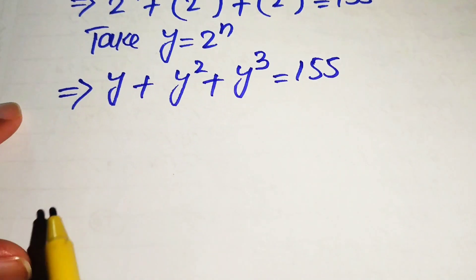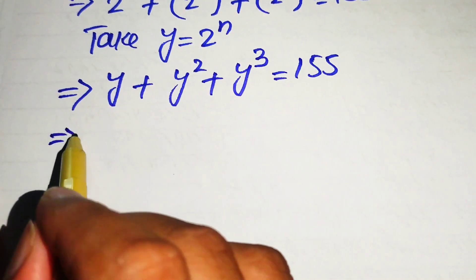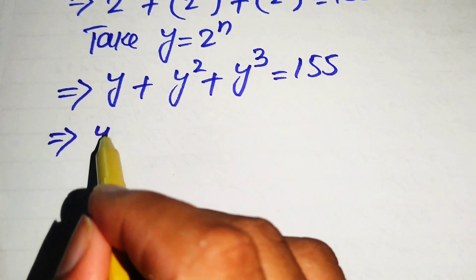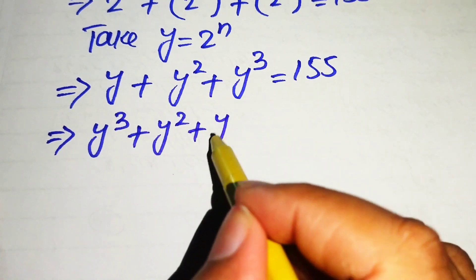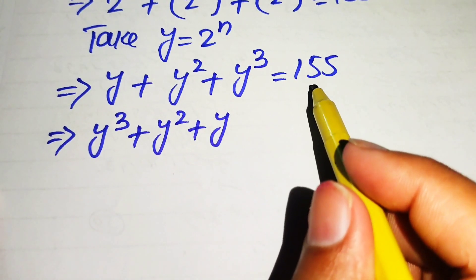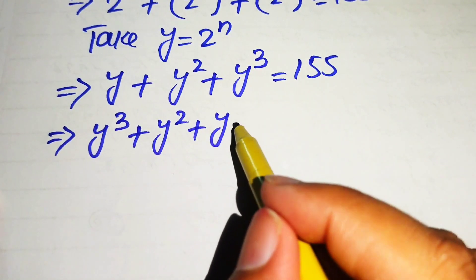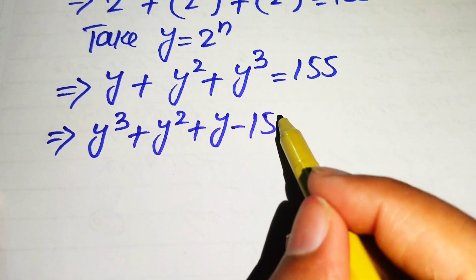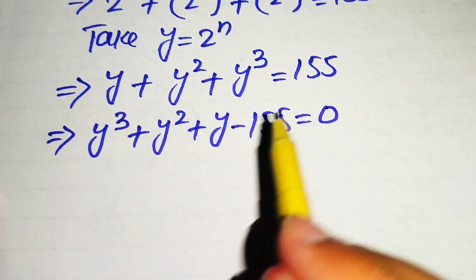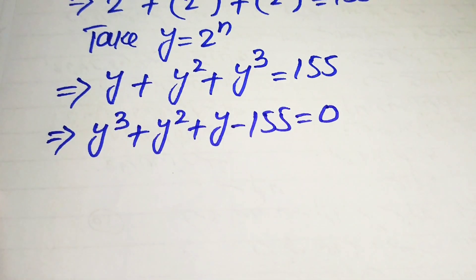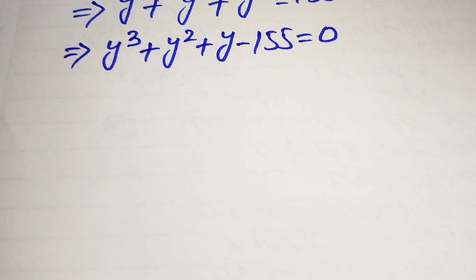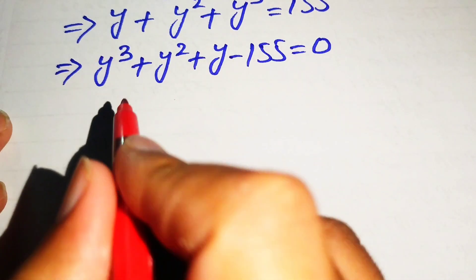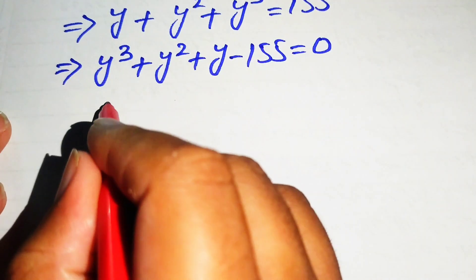We rearrange all these terms and write it as y cubed plus y squared plus y. Moving 155 to the left-hand side gives us y cubed plus y squared plus y minus 155 equals 0.